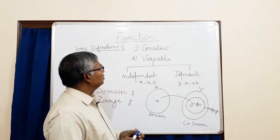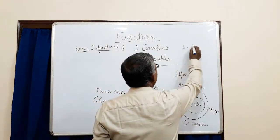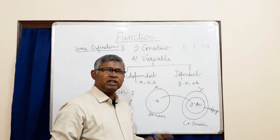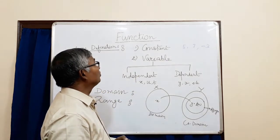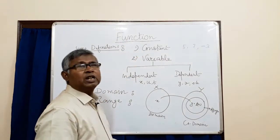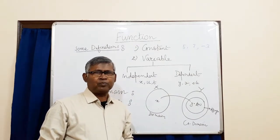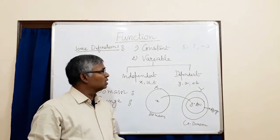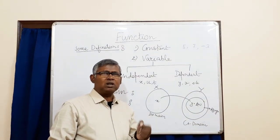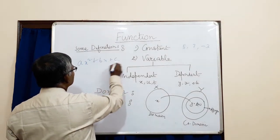Suppose 5, 7, or minus 3 — their value remains the same throughout any calculation. But a variable is different. Chapter calculus mainly depends on this relation of variables. What is a variable? A variable is a quantity whose value changes throughout the calculation. Suppose A x squared plus B x plus c.